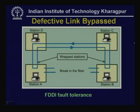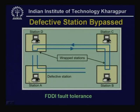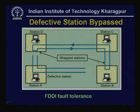Similarly, if there is a station failure, the defective station can also be wrapped up. By wrapping up the two separate rings, the secondary becomes part of the active network, a ring is formed with the remaining stations, and they can communicate using the token passing protocol while the defective station is bypassed. This built-in reliability is provided by the dual counter-rotating ring.